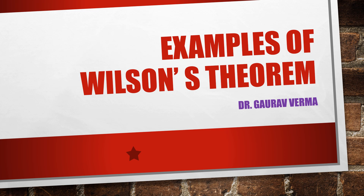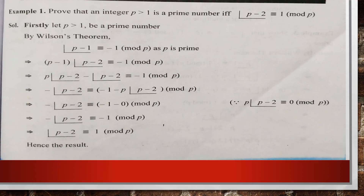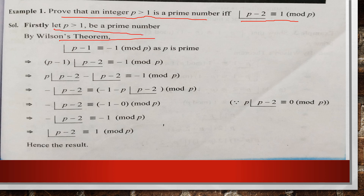Hello friends, in this video we will learn about various problems related to Wilson's theorem, a very important concept of number theory. The first problem is: prove that integer p greater than 1 is a prime number if and only if factorial (p-2) is congruent to 1 modulo p. We know this is a statement of Wilson's theorem: if p is prime, then (p-1)! ≡ -1 (mod p). If you want to learn the proof of Wilson's theorem, you can watch my previous video.